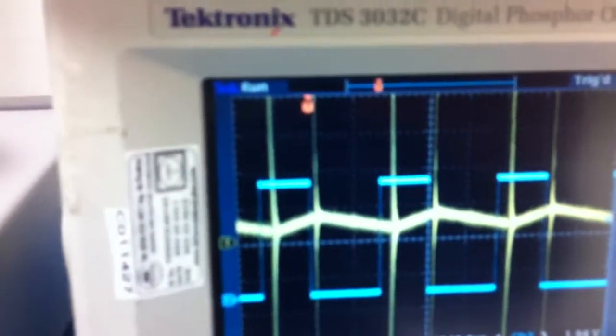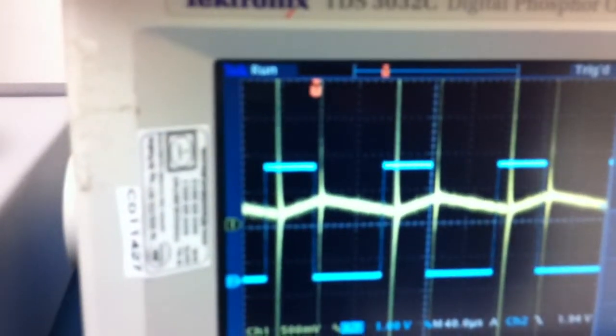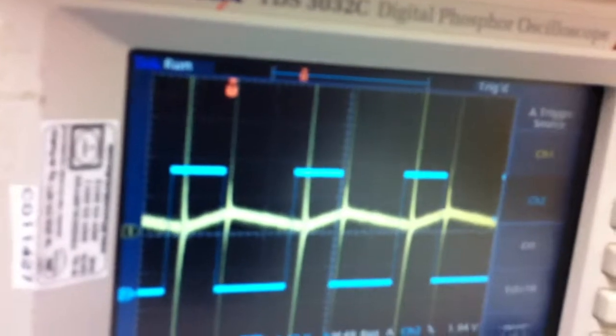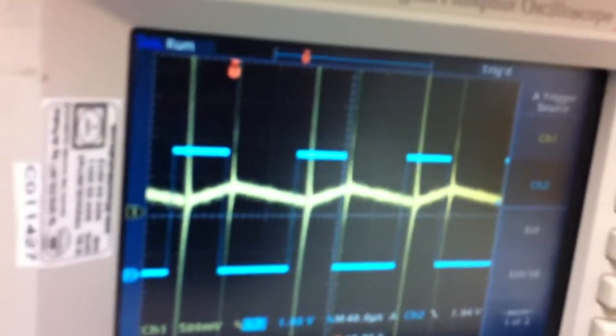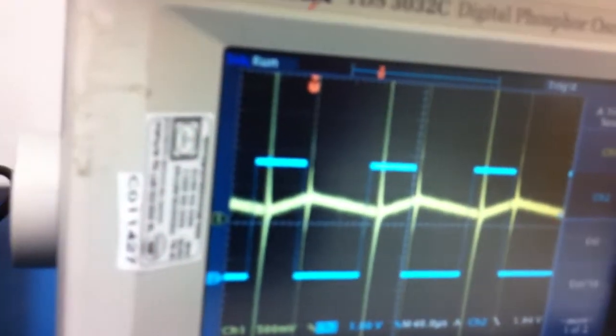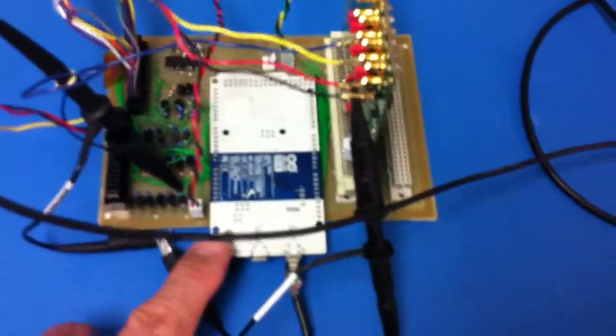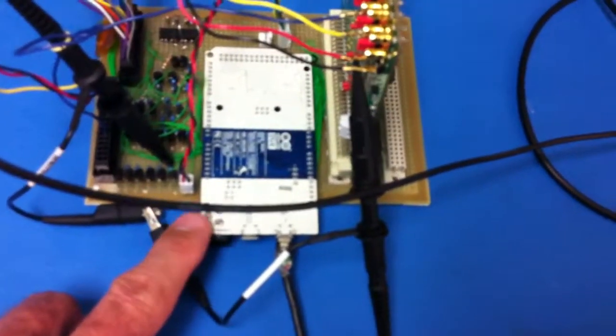As I change this little slider on my Android tablet, the current goes up and down on the power supply depending on the slider, and you can see the current is being regulated. I've got a little PI loop in the Arduino code here, so I learned how to use the Due.